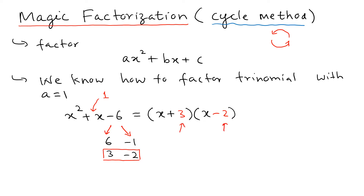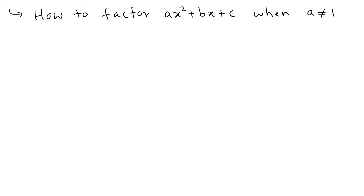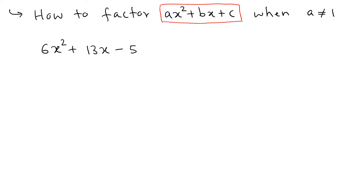That's what happens when a equals 1. Now the question is: what do we do if a is not equal to 1? So the goal is to factor ax squared plus bx plus c when a is not equal to 1. Let's look at an example: 6x squared plus 13x minus 5. First, we're going to multiply the first and last numbers: 6 times negative 5 gives us negative 30. That's our starting point.